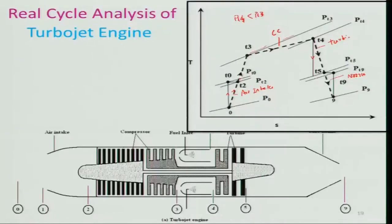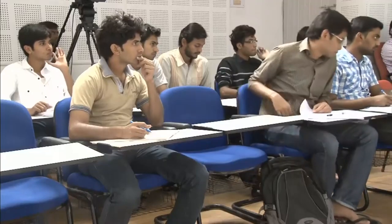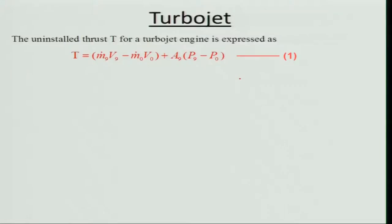Armed with this, we carry out the same analysis as for the ideal cycle, but now incorporating the parameters that account for losses in each component. The uninstalled thrust for the turbojet engine is expressed as T = ṁ_9 V_9 − ṁ_0 V_0 (momentum change of the flow) plus A_9(P_9 − P_0), which is the pressure thrust. In the ideal cycle we neglected this pressure thrust term, assuming fully expanded flow.